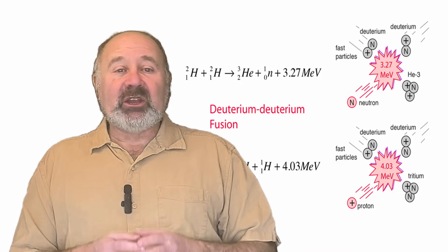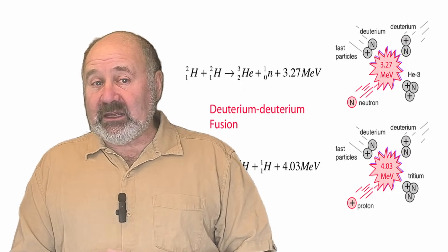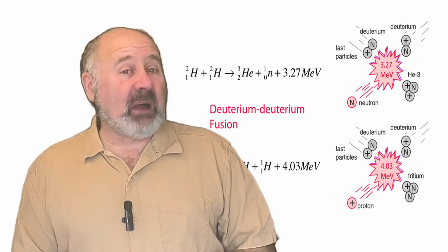Helion plans to use this reaction to generate the helium-3 they need, which might be easier than mining it on the Moon.